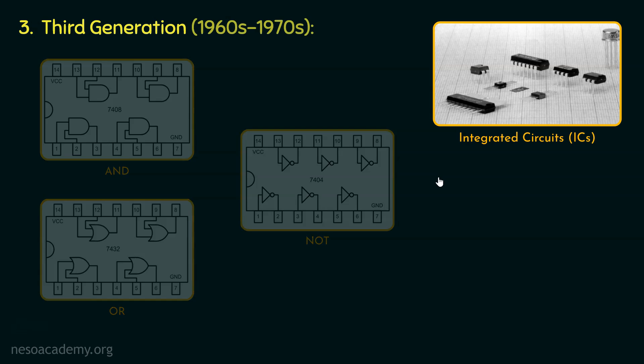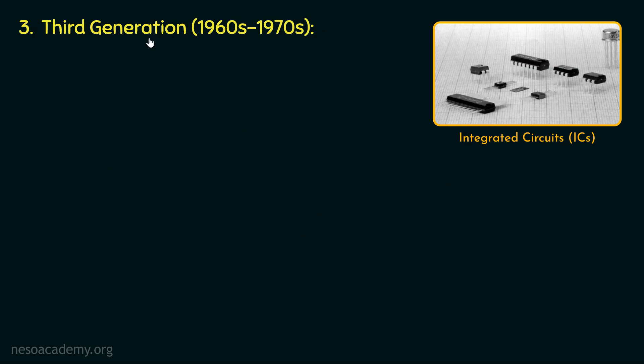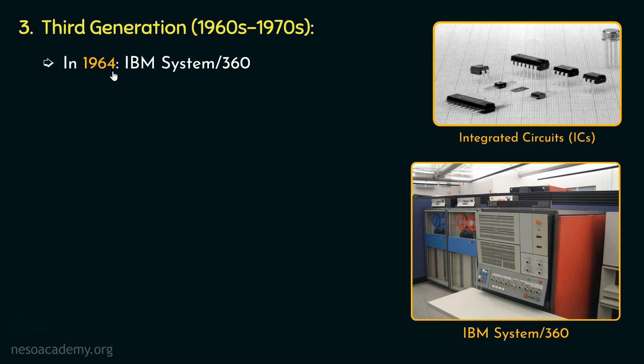Let's now talk about the various milestones of third generation of computers. In 1964, IBM introduced its IBM System 360, which was a mainframe computer, and it marked the advancement in computing, offering a compatible family of machines with varying capabilities to meet diverse business needs.